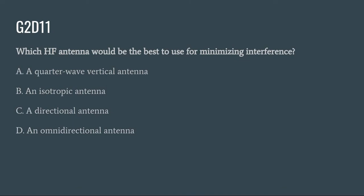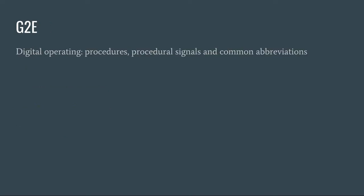G2D11: Which HF antenna would work best to minimize interference? A. A quarter wave vertical antenna. B. An isotropic antenna. C. A directional antenna. Or D. An omnidirectional antenna. The correct answer is C: a directional antenna. Moving on to G2E: digital operating procedures, procedural signals and common abbreviations.